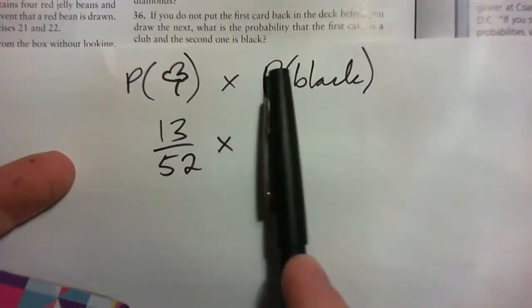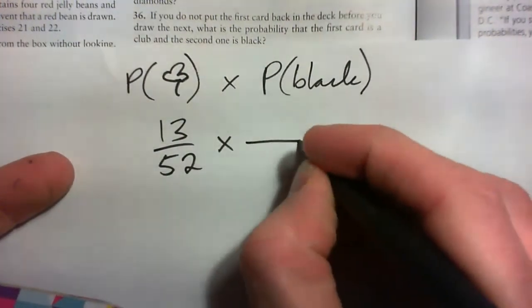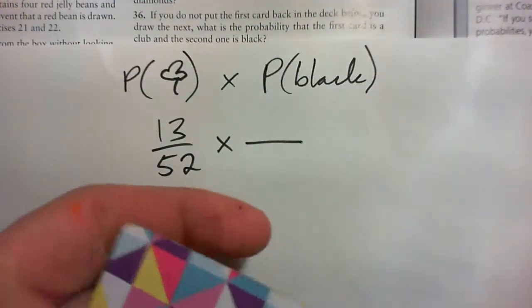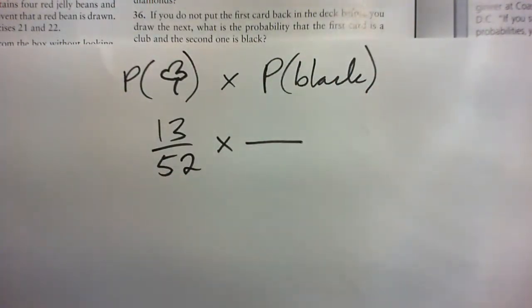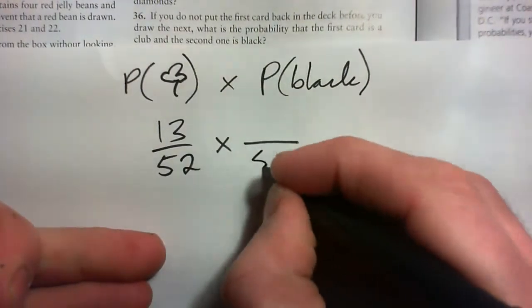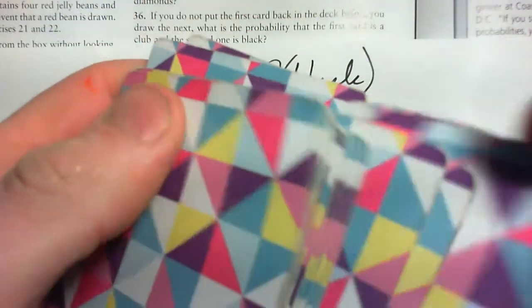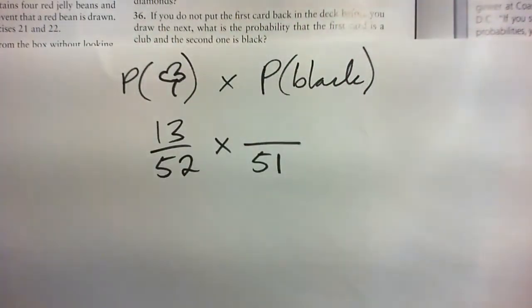Now what's the probability the second one is black? Good question. Well, there are 51 cards remaining. How many black cards? That's the question, how many black cards?